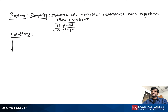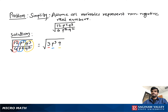Simplify square root of 12P to the 5th, Q to the third power, divided by 4P squared Q squared. First, we simplify inside the radical: 12 divided by 4 is 3, P to the 5th divided by P squared is P cubed, and Q to the third divided by Q squared is Q.